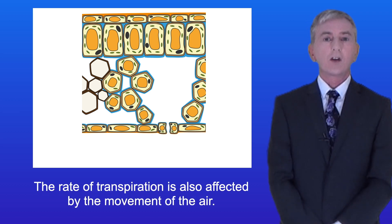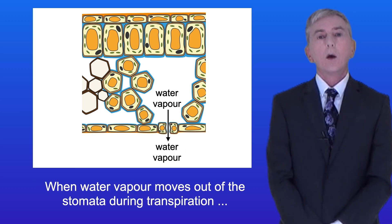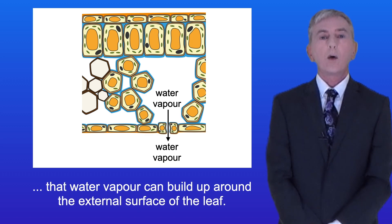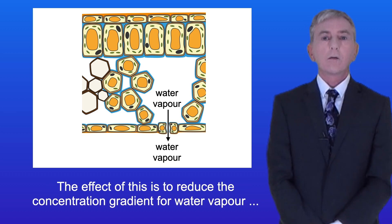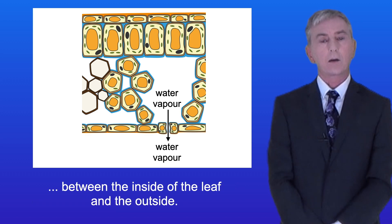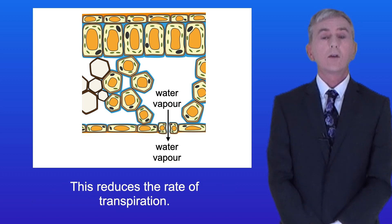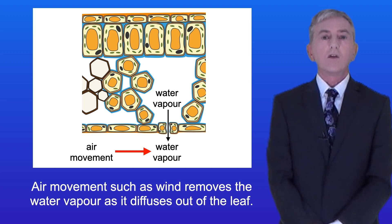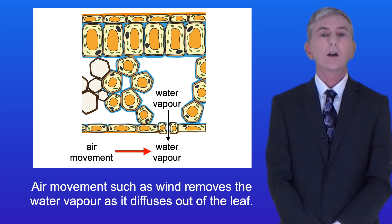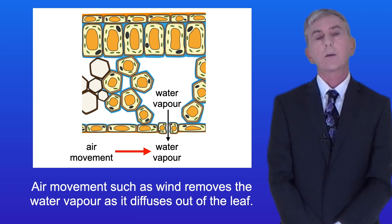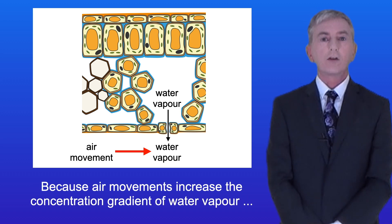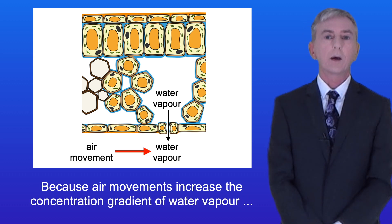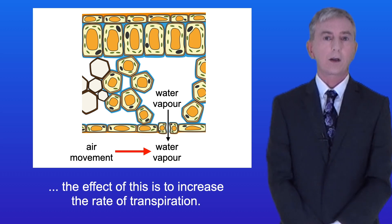The rate of transpiration is also affected by the movement of the air. When water vapor moves out of the stomata during transpiration, that water vapor can build up around the external surface of the leaf, reducing the concentration gradient for water vapor between the inside and outside of the leaf, and this reduces the rate of transpiration. Air movement such as wind removes the water vapor as it diffuses out of the leaf, so air movements increase the concentration gradient of water vapor and increase the rate of transpiration.